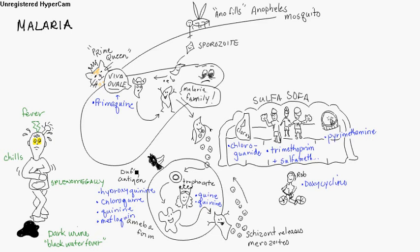First, it starts with a female Anopheles mosquito. She releases a sporozoite into you, and then it travels to the liver. And in the liver, it does either two things.